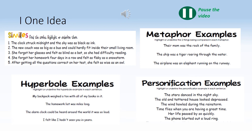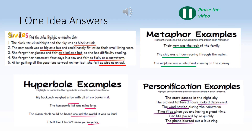Here is the task for one idea today. Have a look at the four different figurative language techniques: similes, metaphors, hyperbole, personification. Write down where each technique appears in the given sentences. For example, the first sentence is 'The clock struck midnight and the sky was as black as ink' — the simile is 'as black as ink.' Work through the rest. The answers will be on the next slide, so pause the video and try this task. Then pause again to check your answers.